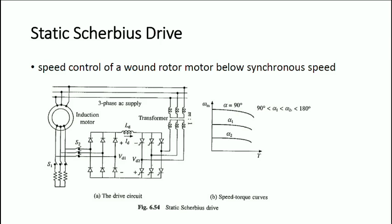Since active power is getting reduced and reactive power is getting increased, the overall power factor of the system will be reduced — the system runs at a reduced power factor. This is the basic principle of the static Scherbius drive. The torque-speed graph shows variation when alpha, the firing angle of the inverter, is changed. The firing angle varies between 90° and 180°, because for an inverter the firing angle must be greater than 90°. When alpha is 90°, you get the maximum speed.